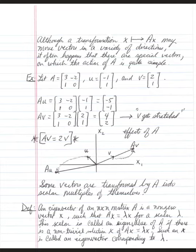Let's look at a definition. An eigenvector of an n by n matrix A is a non-zero vector X, such that A times X is equal to lambda X for a scalar lambda. This scalar is called an eigenvalue of A if there is a non-trivial solution of this equation, AX equals lambda X. Such an X is called an eigenvector corresponding to lambda.